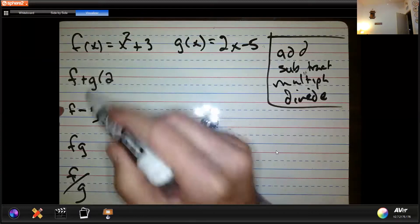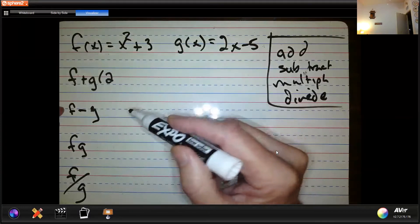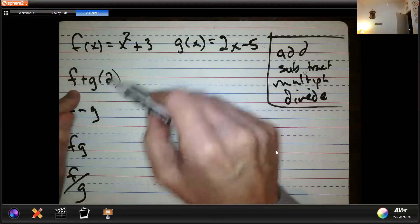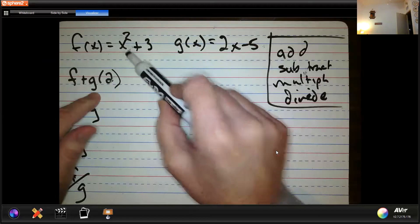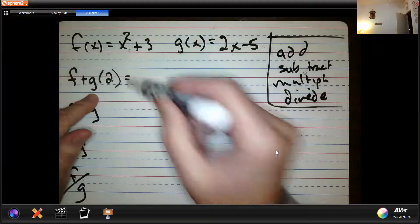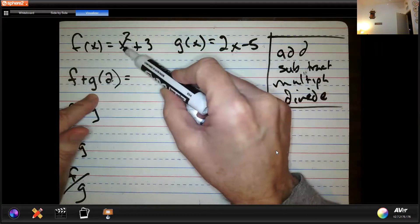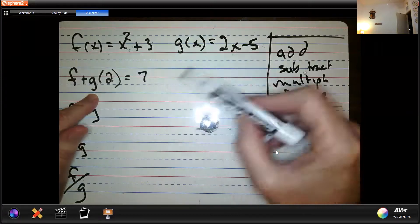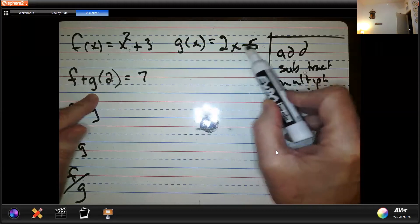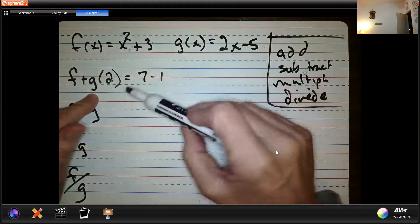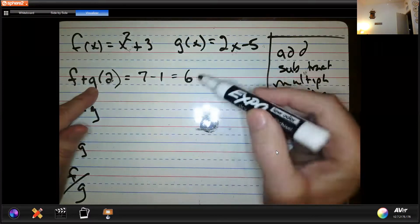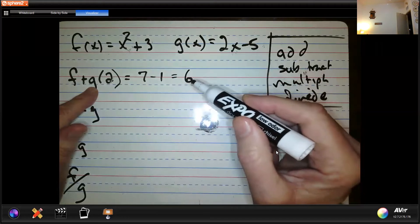So let's say we put 2 in f. Well, what this says is take 2 in f, and take 2 in g, and add those two answers together. So if I put 2 into f, that'd be 4, 5, 6, 7. And if I put 2 into g, that would be 4 minus 5, negative 1. So f plus g would be 6. What do you think? How about that?